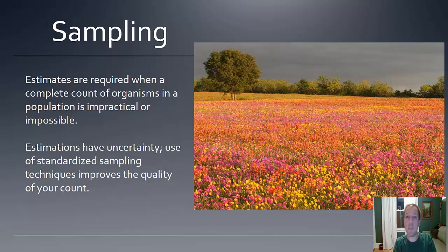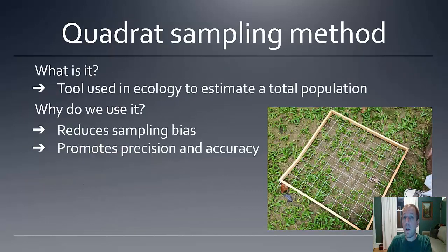Estimations by nature have uncertainty, and so it's important to have standardized sampling techniques across all scientists. That way, if there's a common understanding of how to come across an estimate, there's going to be less confusion and less disagreement between different scientists. The quadrat sampling method is the tool that we're going to learn about in this class that's used by ecologists to be able to estimate population size.